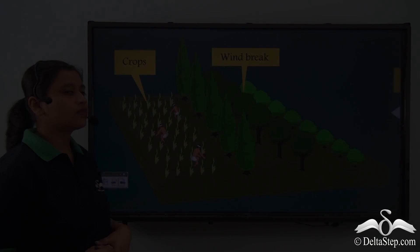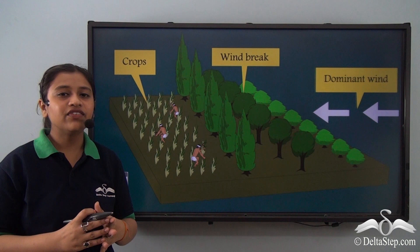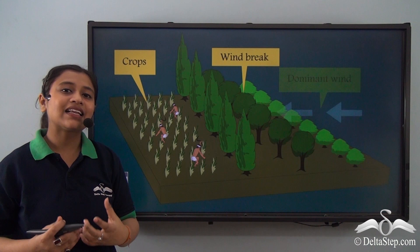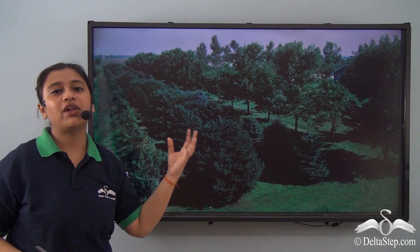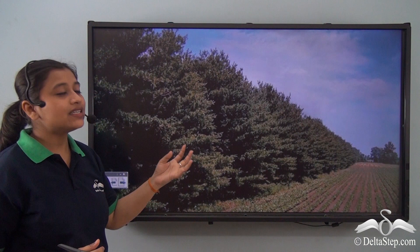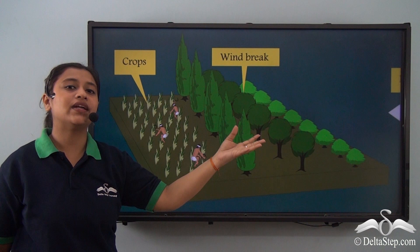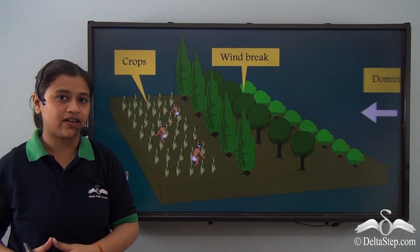Another way of conserving the soil is by creating windbreaks. We can plant trees along long distances perpendicular to the direction of the wind — this method of planting is also known as shelter planting. These act as windbreaks against the dominant or strong winds that could otherwise lead to erosion of the soil, making it an important way of protecting the soil from agents of weathering.